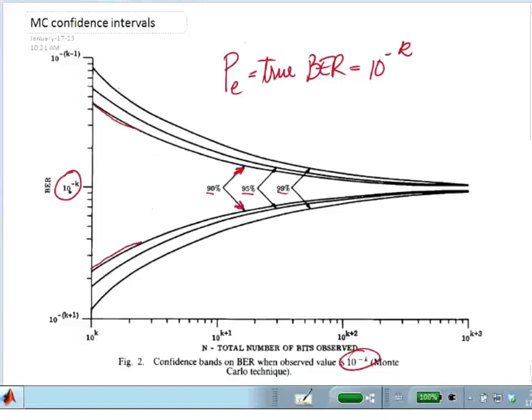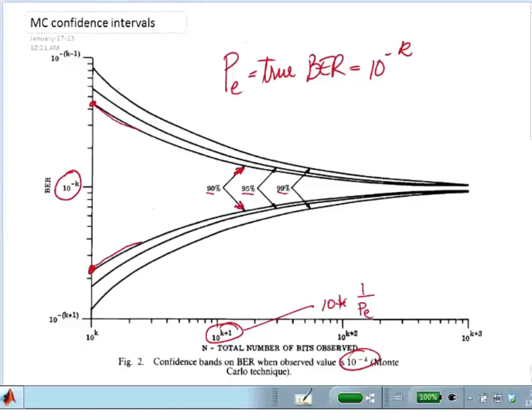So if I were to do ten to the k simulations, and the probability of error is ten to the minus k, then these would be the bounds that with ninety percent probability my estimate would fall somewhere in that range. And so let's take another one. Let's suppose that I did ten times as many trials as the inverse of the probability of error. So if I take this example, then this is ten times one over the true probability of error.